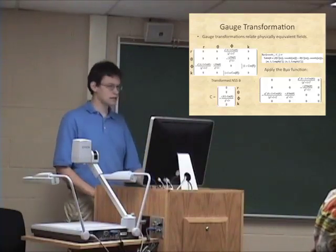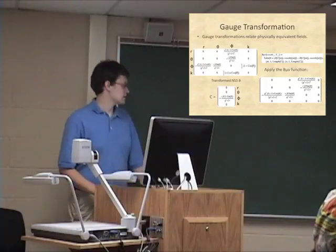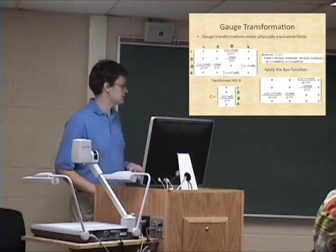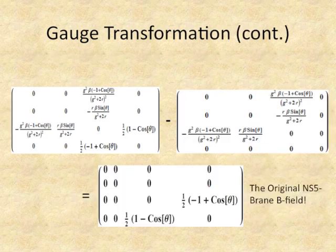There is a gauge transformation. Gauge transformations are just transformations that relate physically equivalent fields like the B field — they don't change any of the physics. I looked at where the interesting terms appeared, and since the matrix is antisymmetric, what's here is mirrored negatively. I took one of those terms and was able to calculate the gauge parameter vector C, which has zeros everywhere except in one position. I put that into my B-mu-nu function and got a matrix where the terms match up very nicely with what we need, meaning if you apply that gauge transformation, you get the original NS5 brane B field — exactly what we wanted.